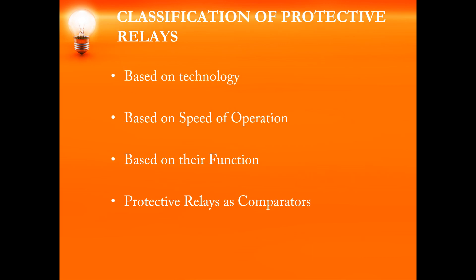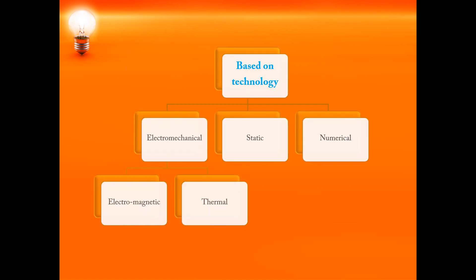Next comes the classification of relays. Relays can be classified on different parameters. First, based on the technology used or the construction materials. Next, based on the speed of operation — how fast it is going to operate. Next, based on the function which they perform. And the last one is how the protective relays are used as comparators. Based on technology, there are three classifications: electromechanical, static, and numerical relays.